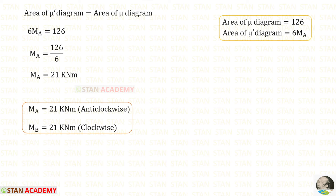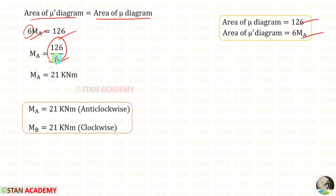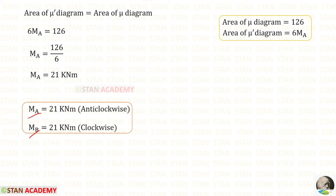Now let us equate the area of the Mu-dash diagram to the area of the Mu diagram. We have 6·Ma = 126, so Ma = 126/6 = 21. The values of Ma and Mb are both 21 kilo newton meter. Ma acts in the anti-clockwise direction and Mb acts in the clockwise direction.